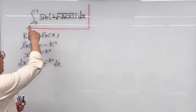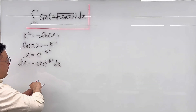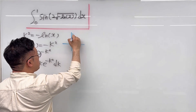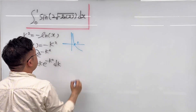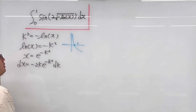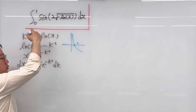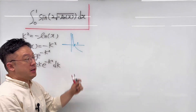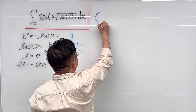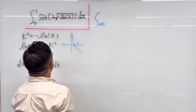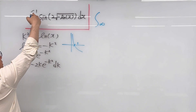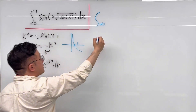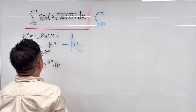The lower and upper bounds need to change. Looking at the graph of negative ln(x): when x goes to 0, negative ln(x) goes to infinity, so the lower bound becomes infinity. When x goes to 1, negative ln(x) goes to 0, so the upper bound becomes 0.